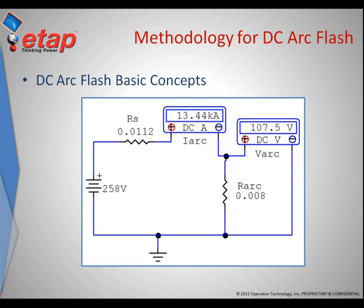In the previous slide, we noticed that the magnitude of the DC short circuit current was 23.03 kilo amps. In this case, we will see that once the arc resistance is introduced into the system, the magnitude of the arcing current now becomes 13.44 kilo amps and the arc voltage drop now becomes 107.5 volts DC.